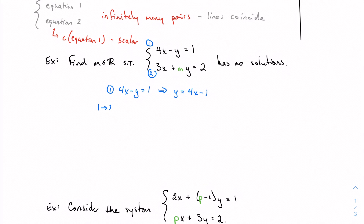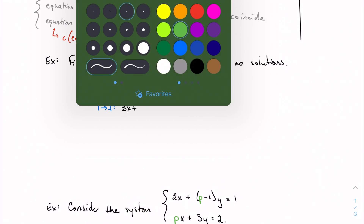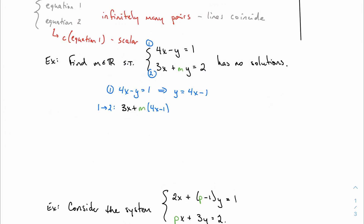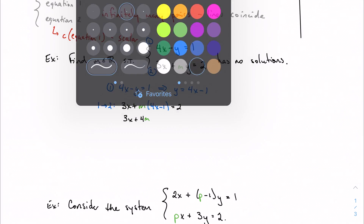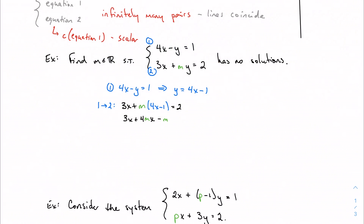I can take equation one and plug it into equation two. So I now have 3x plus M times (4x minus 1) equals 2. Simplifying, I get 3x plus 4Mx minus M equals 2. Solving for x, I factor out x to get (3 + 4M)x equals 2 + M, which means x equals (2 + M) over (3 + 4M). I'm color-coding M to show it's a constant, not a variable — we're treating it like a real number.